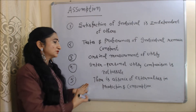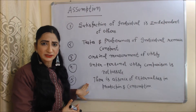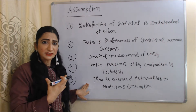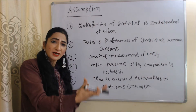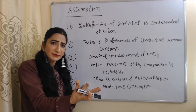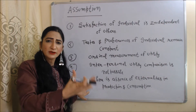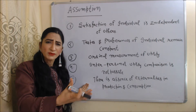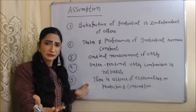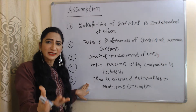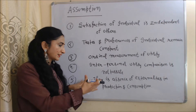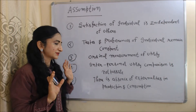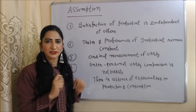There is an absence of externality in production and consumption. Sometimes our production and consumption decisions affect people who are not related to this process. For example, because of your production, society bears significant environmental pollution — this is called negative externality in production. But this principle assumes there is an absence of externality in production and consumption.